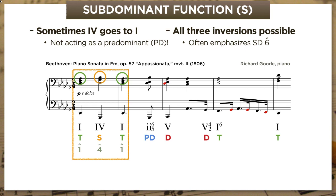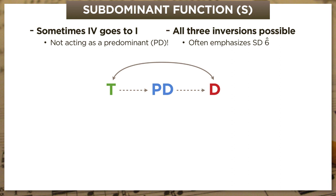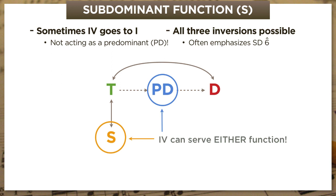So now you can see that I didn't make this up—sometimes IV really does go to I. Let's take a second to visualize our new expanded functional model. We've got tonic, which often goes to a predominant and finally to a dominant. Or we can skip the predominant and just toggle between tonic and dominant. But now there's this alternate path—the away-and-back-again motion of the subdominant function—which never goes to predominant or dominant; it just goes back to tonic. The only really tricky thing to remember is that IV can carry either a predominant or subdominant function depending on context. No chord has a function in a vacuum.